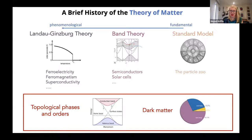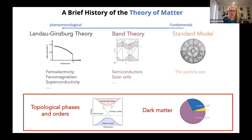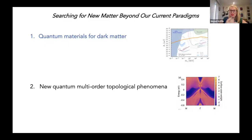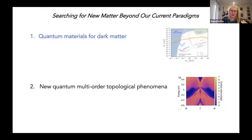I'll start with new ideas for dark matter detection, and in the second part I'll discuss how we can design new topological phases and order parameters in materials. The first part covers how we can search for this new type of matter beyond conventional paradigms using theory, computation, and materials informatics. The second part covers designing materials with multiple cross-coupled order parameters that also have technological relevance.